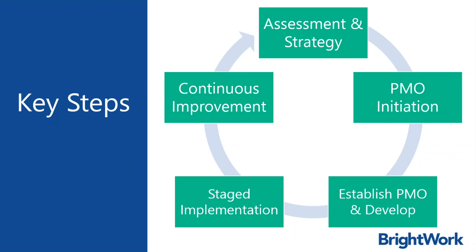And finally, continuous improvement. Really any project, and especially a PMO project, should have continuous improvement. There's always going to be feedback, and there are always ways that you can take it to the next level. You can evolve and mature your project management office — the people aspect, the process aspect, all of that together. There's always going to be a part of the process.